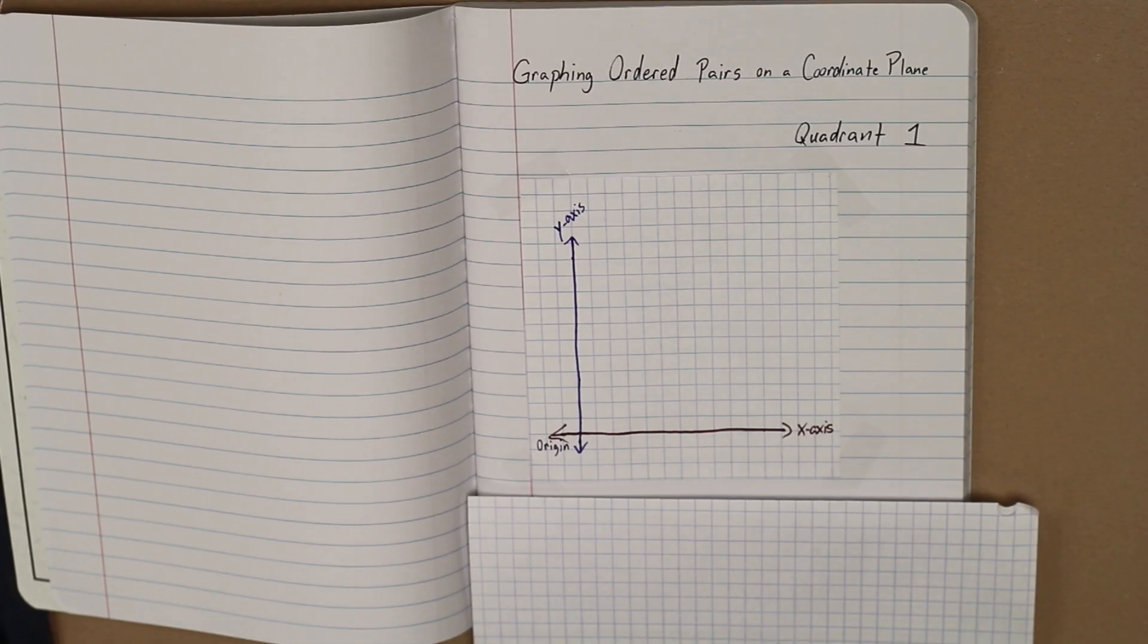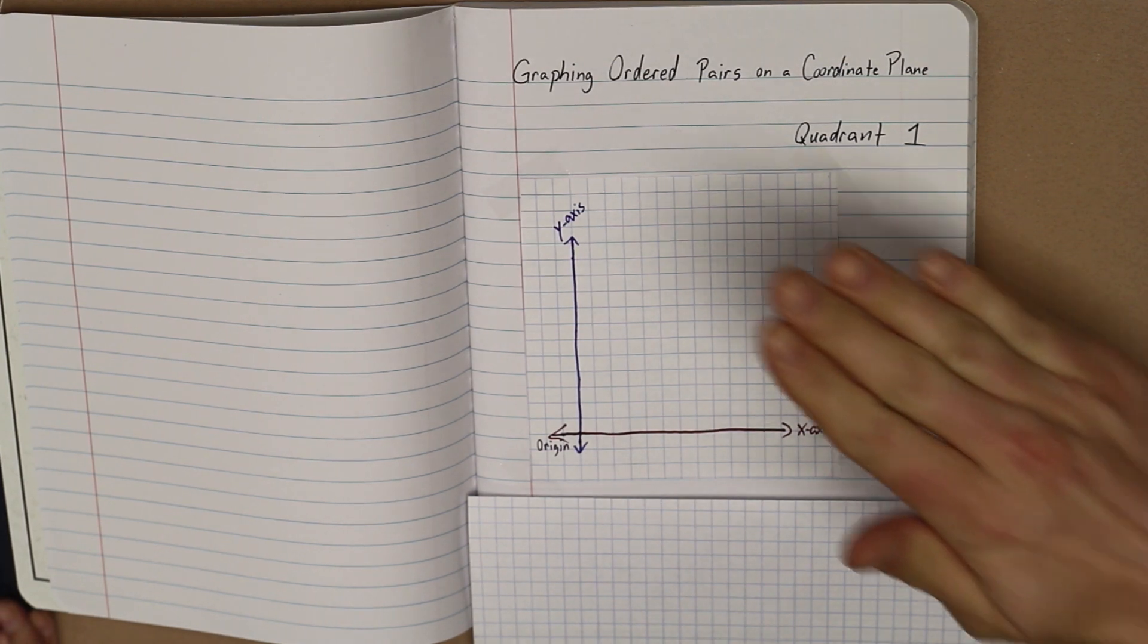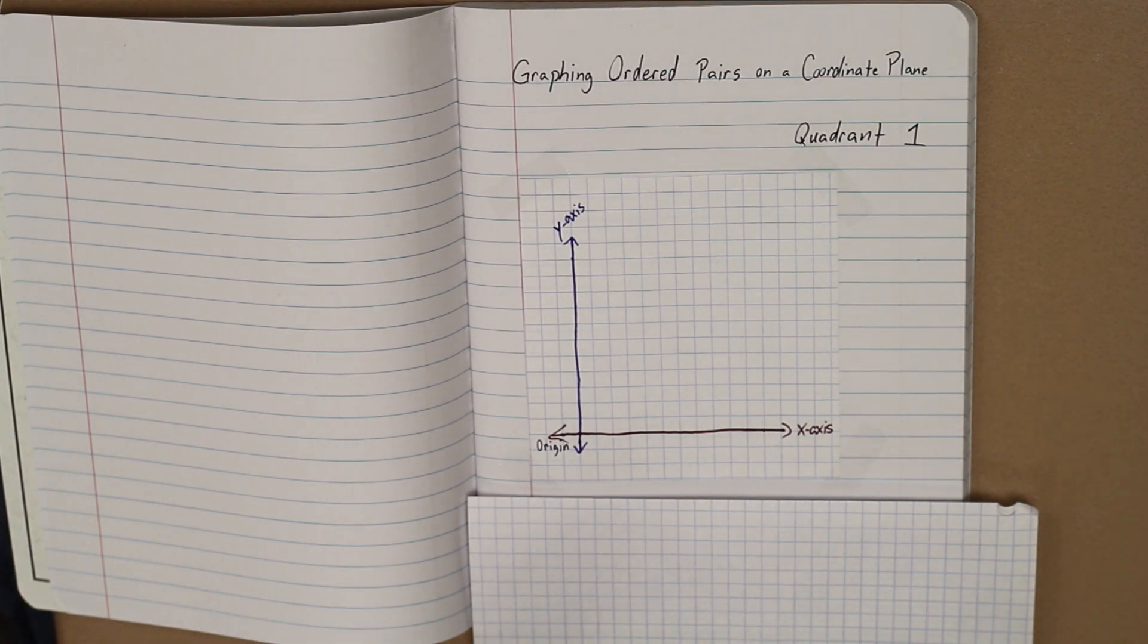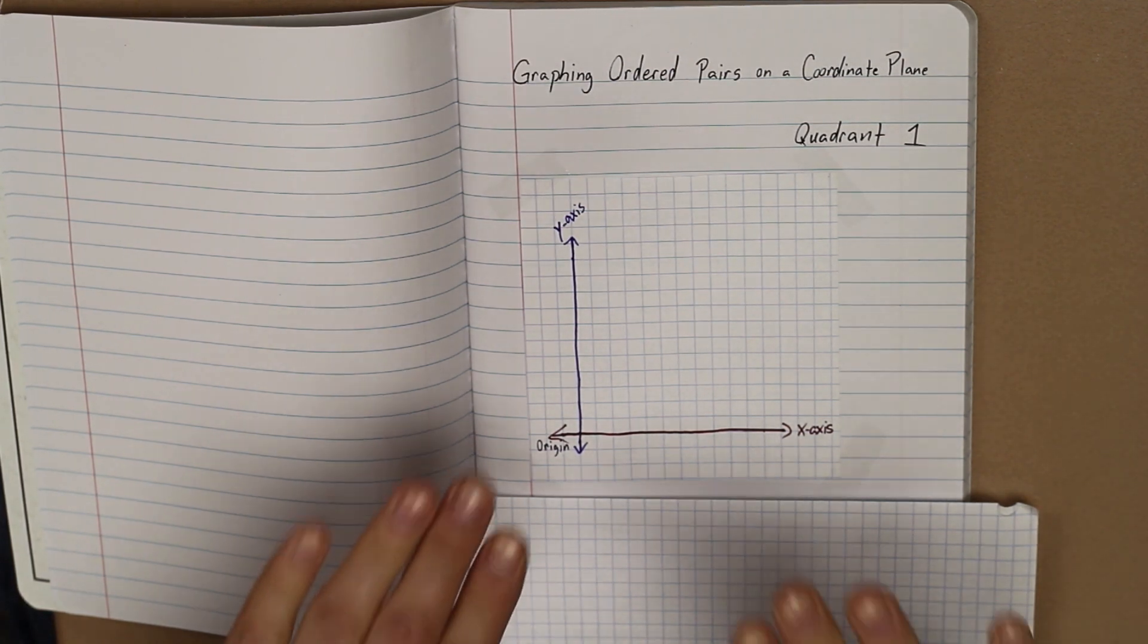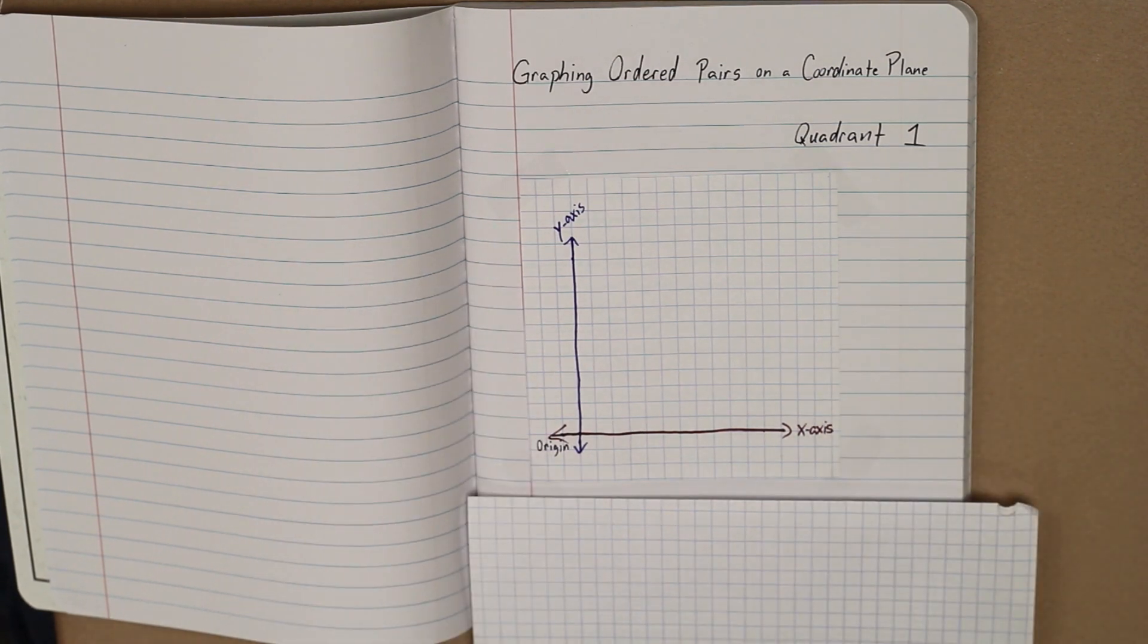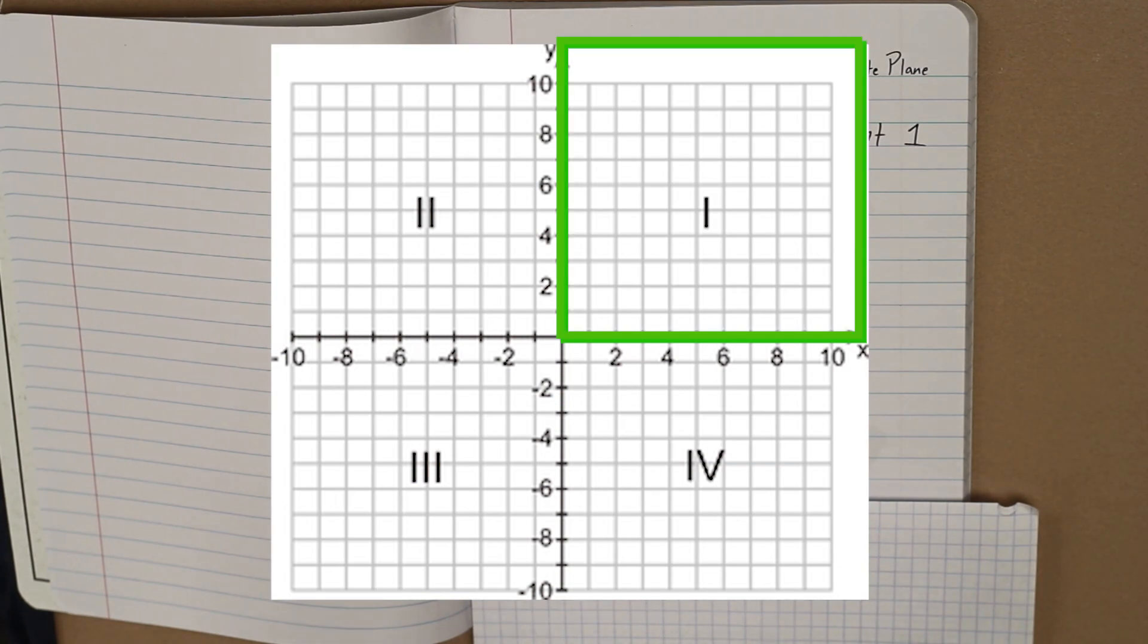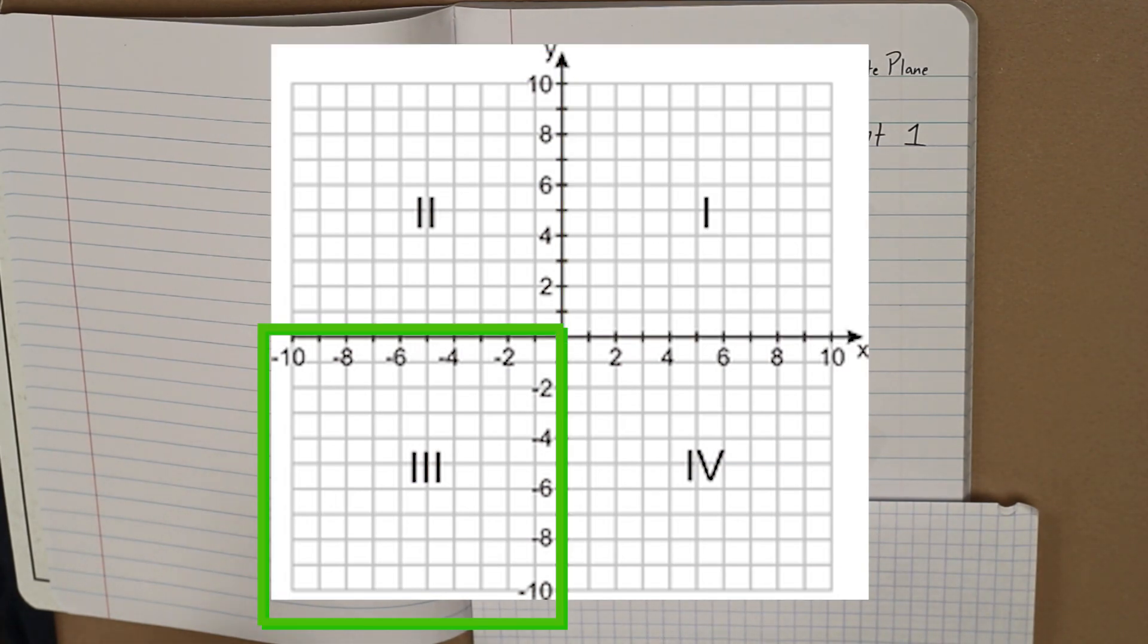Hey guys, today we're going to be talking about graphing ordered pairs on a coordinate plane. What is a coordinate plane? A coordinate plane is not one of those things that flies through the air. It is a two-dimensional surface or place where we can plot points. A coordinate plane is made up of four quadrants: quadrant one, quadrant two, quadrant three, and quadrant four.